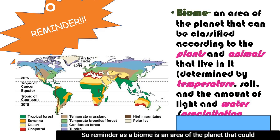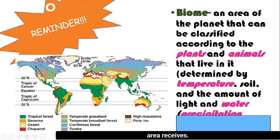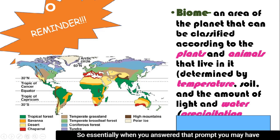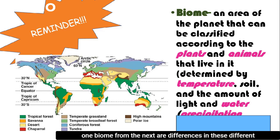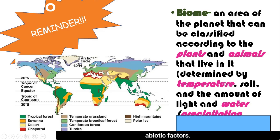So as a reminder, a biome is an area of the planet that can be classified according to the plants and animals that live in it, and also by differences in temperature, soil, the amount of light, and water or precipitation levels that that area receives. These different abiotic factors are what characterize one biome from the next, and plants and animals live in certain areas of the world determined by these factors.